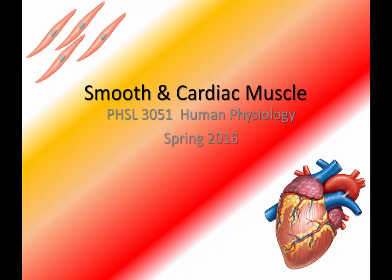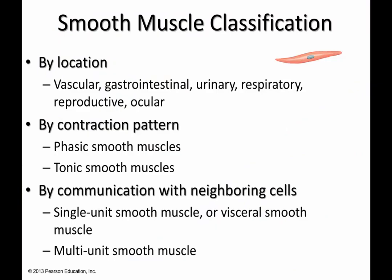Our third and final lecture in the muscle series is on smooth and cardiac muscle. You can classify smooth muscle by the locations you find it: in the vasculature, in the gastrointestinal tract, in the urinary tract, the bladder, respiratory system, reproductive systems, and in the eye.